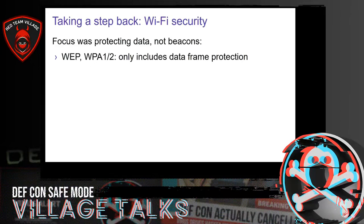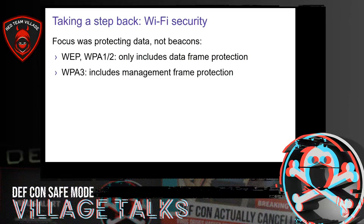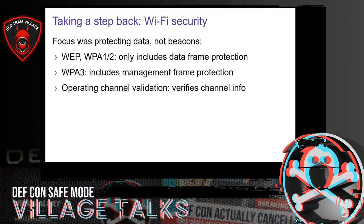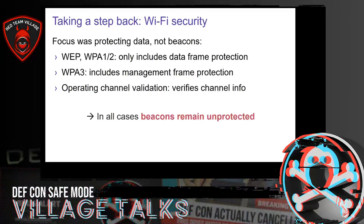Previously, the focus was on protecting transmitted data and not beacons. For example, WPA1 and WPA2 really focus on protecting data only. WPA3 does mandate that certain management frames are also authenticated; however, unfortunately, this does not include beacons. And even if we look at some very recent additions to Wi-Fi, such as operating channel validation, this only verifies the information about the current channel that the access point is operating on. In other words, even if we use all the modern standards, beacons are not protected and they can be forged by an adversary.